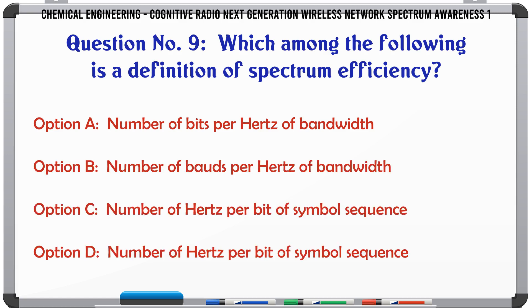Which among the following is a definition of spectrum efficiency? A. Number of bits per hertz of bandwidth. B. Number of nodes per hertz of bandwidth. C. Number of hertz per bit of symbol sequence. D. Number of hertz per bit of symbol sequence.